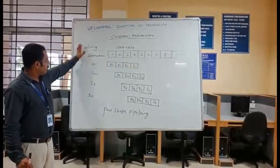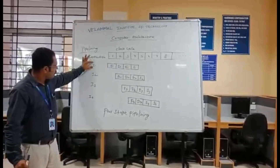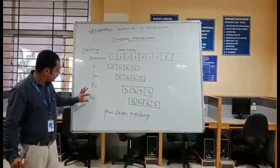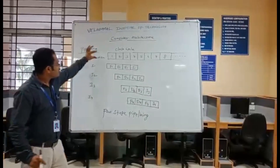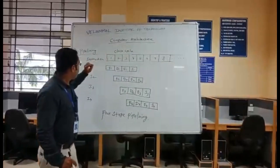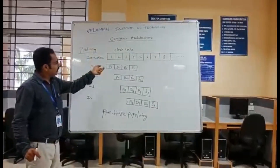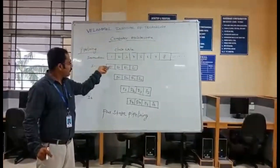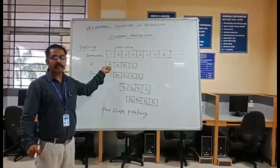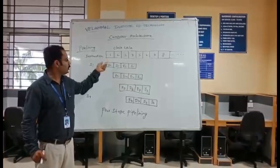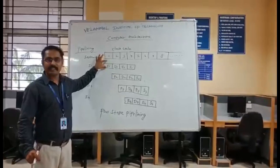Let me take 4 instructions: Instruction 1, Instruction 2, Instruction 3, and Instruction 4. This is the clock cycle. We consider that for each instruction, each stage is taking only one clock cycle for performing its operations.